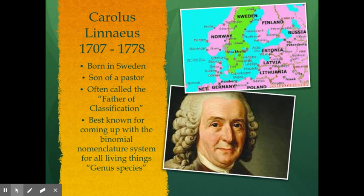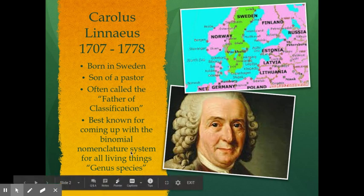He was born in 1707 to 1778. He was born in Sweden, so he was a Swedish scientist. He was assigned as a pastor, which is kind of interesting — the story of how he got involved with plants, but we'll get to that in a bit. He's often called the father of classification, which we know is because he is best known for coming up with the binomial nomenclature system, which means the two-name system for organisms, coming from a genus and species name.